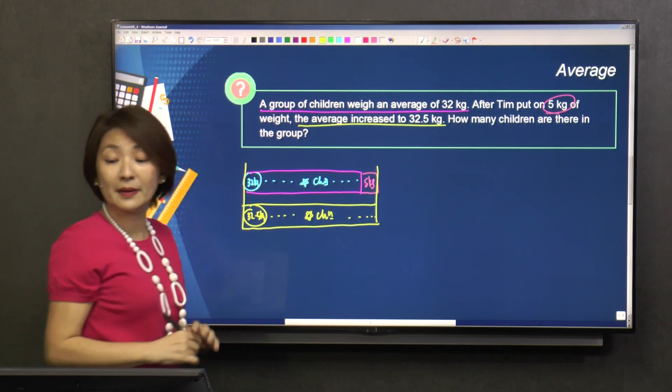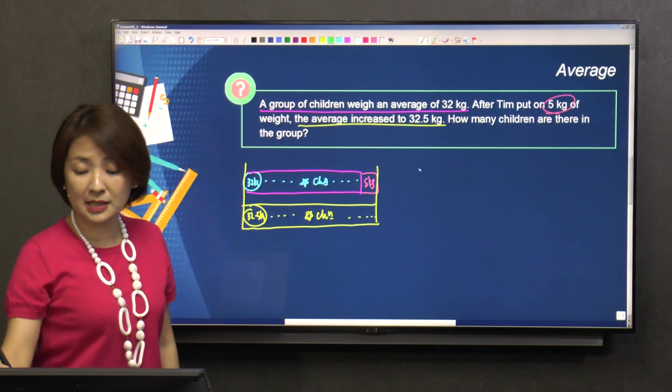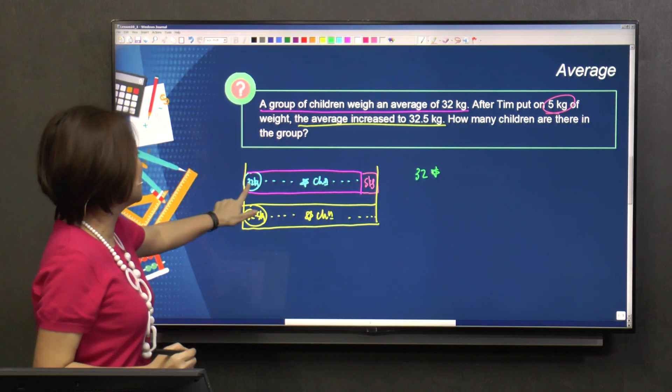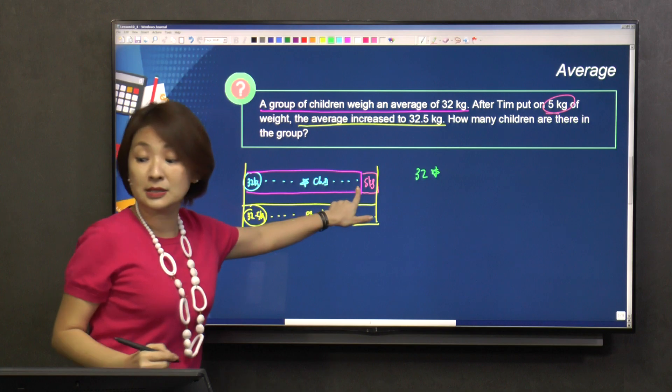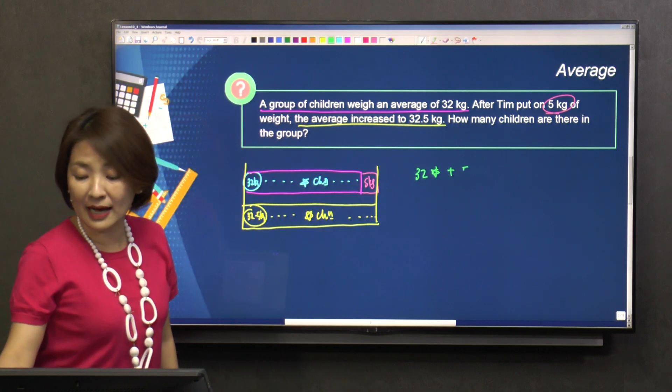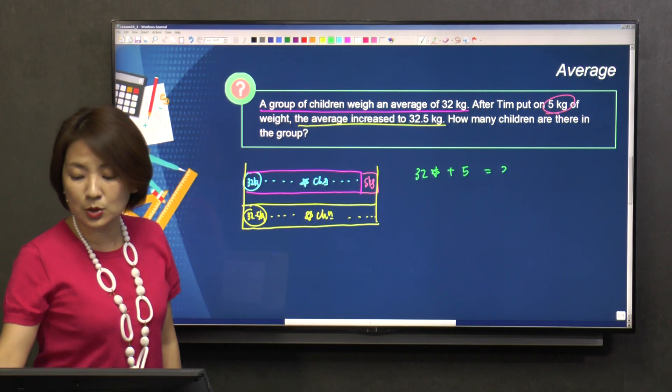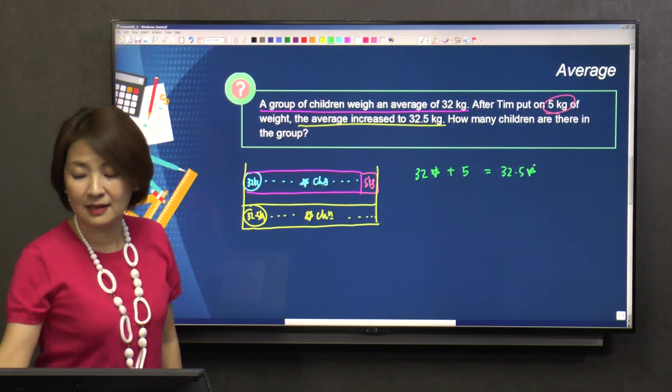I will write my number sentence. My number sentence will be 32 star, 32 kilograms times star, 32 star plus 5 will be equals to 32.5 star, and that's it.